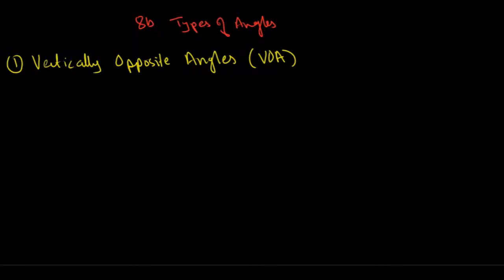Welcome to the second part of the lines and angles video series. In this one, we'll further go into types of angles. The first one is vertically opposite angles.